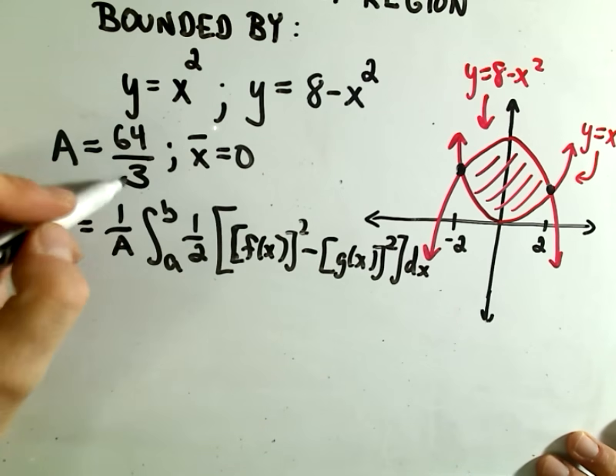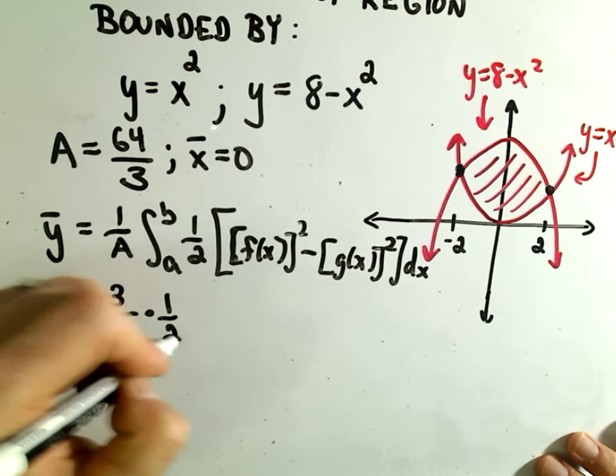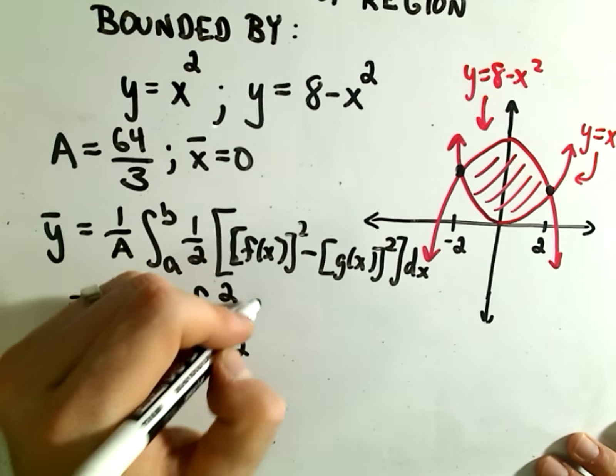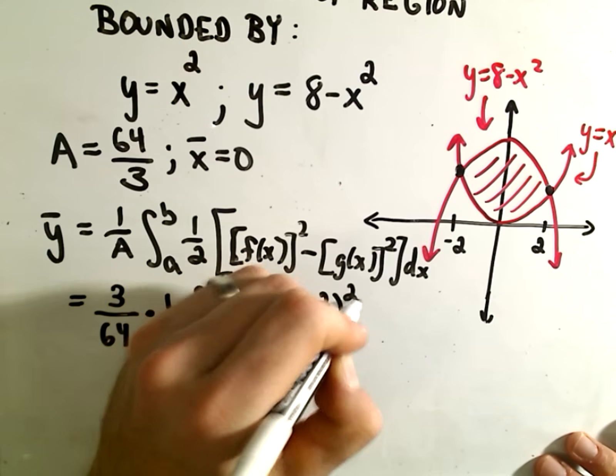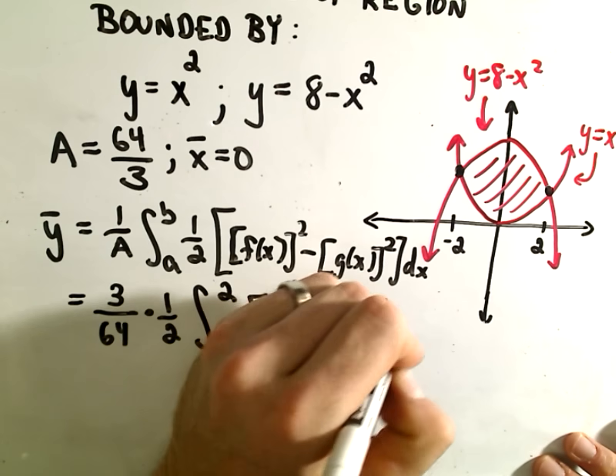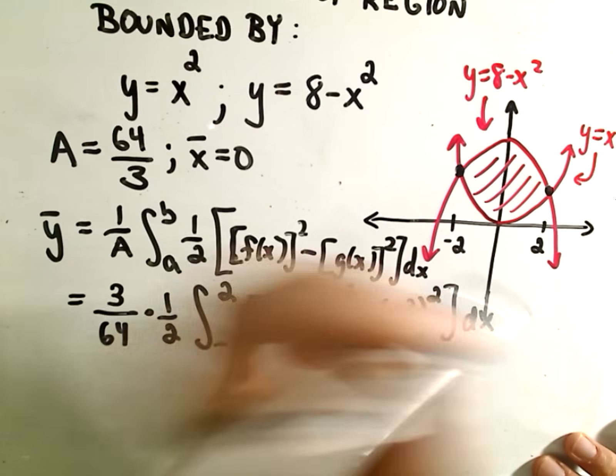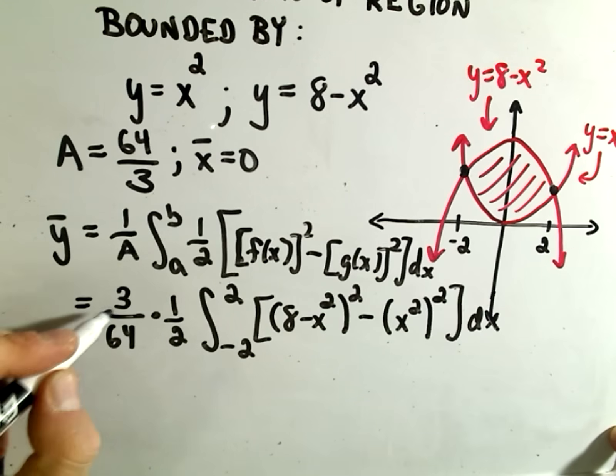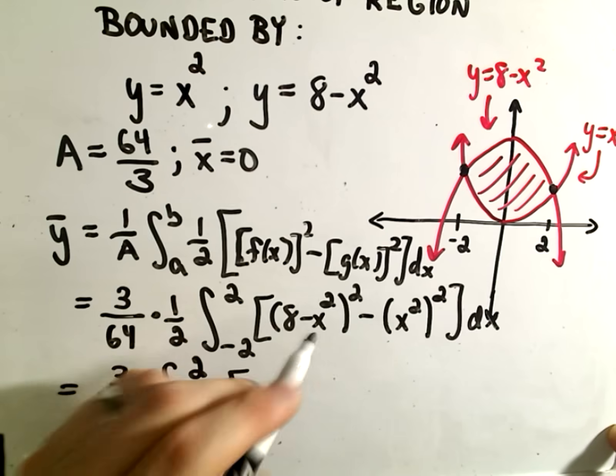We already said 1 over the area. If we flip it, that'll be 3/64. I can pull the 1/2 out front. Our limits of integration will be from -2 to 2. We have to take the top function, (8 - x²)², minus the bottom function, x², squared, dx. Kind of tedious, but not the end of the world.